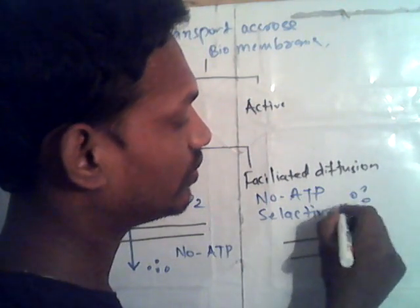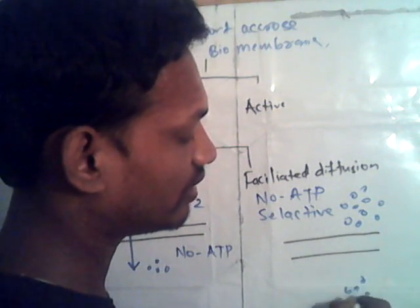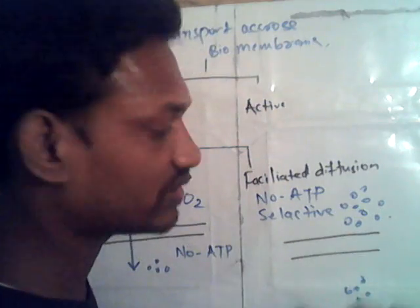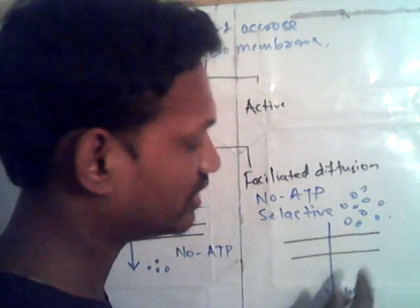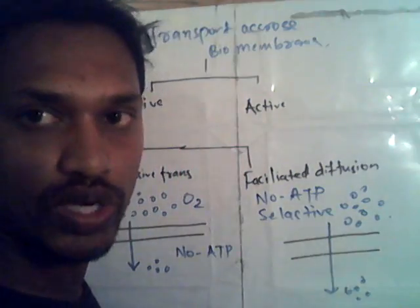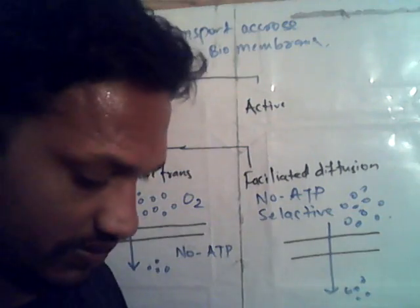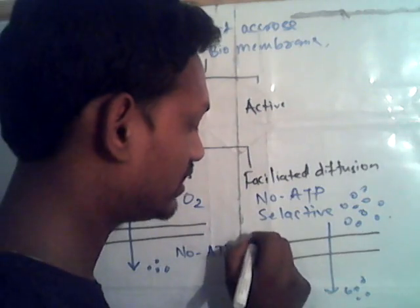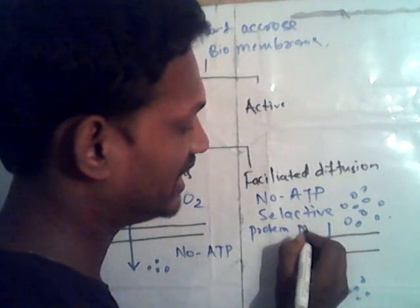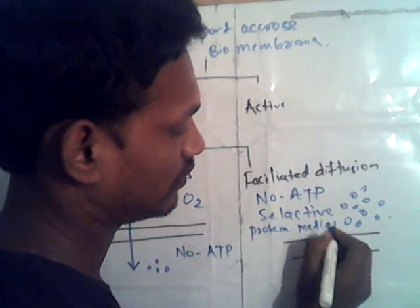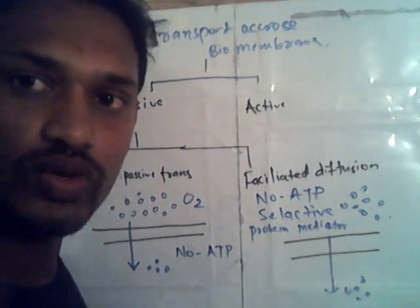For example, the concentration gradient is higher outside and lower inside. This is a specific substance that is moving along the concentration gradient, from higher concentration to lower concentration. Here, there is a protein mediator. One vital thing is that this is a protein mediator — some proteins are required to transport the substance.